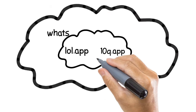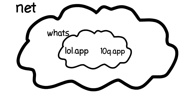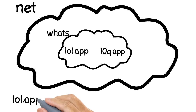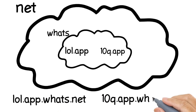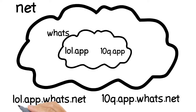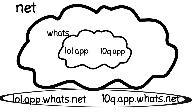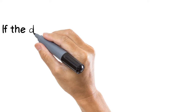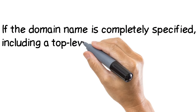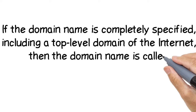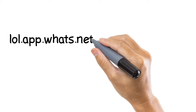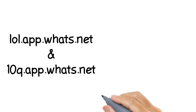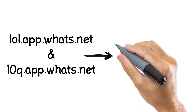Now consider that the network words is further connected to the internet. Therefore, the domain names of the hosts will be lol.app.words.net and 10q.app.words.net. Note that these two domains contain the top-level domain of the network, i.e., internet. If the domain name is completely specified including the top-level domain of the internet, then the domain name is called a Fully Qualified Domain Name. Therefore, lol.app.words.net and 10q.app.words.net are Fully Qualified Domain Names.